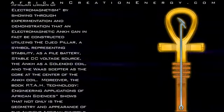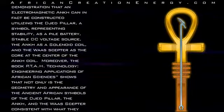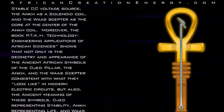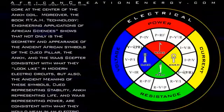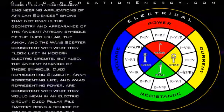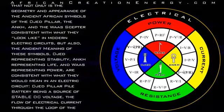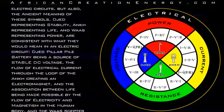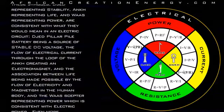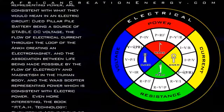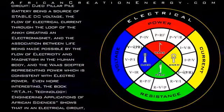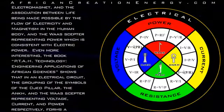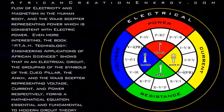Moreover, the book Ta Technology: Engineering Applications of African Sciences shows that not only is the geometry and appearance of the ancient African symbols of the Jed Pillar, the Ankh, and the Wa-Sceptor consistent with what they look like in modern electric circuits, but also the ancient meaning of these symbols — Jed representing stability, Ankh representing life, and Wa-S representing power — are consistent with what they would mean in an electric circuit. Even more interesting, in an electric circuit the grouping of the Jed Pillar, the Ankh, and the Wa-Sceptor, representing stability, voltage, and power respectively, forms a mathematic equation essential and fundamental to modern circuit theory known as Ohm's Law.